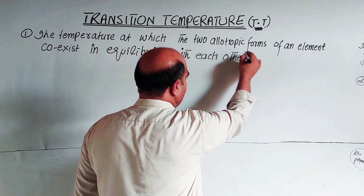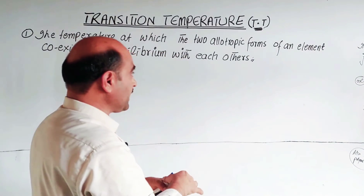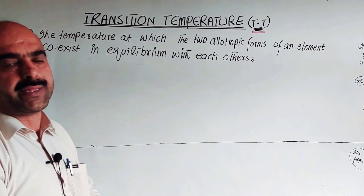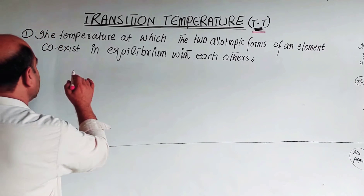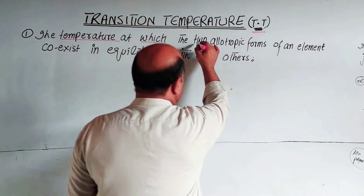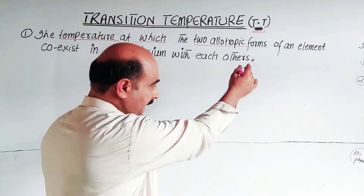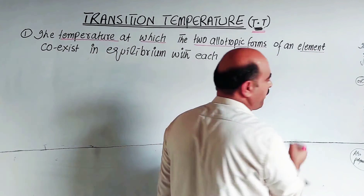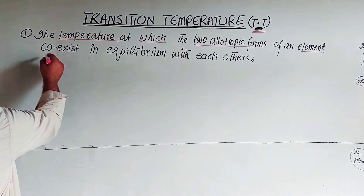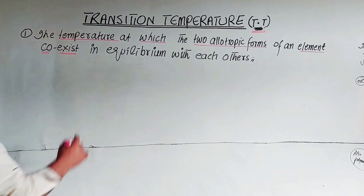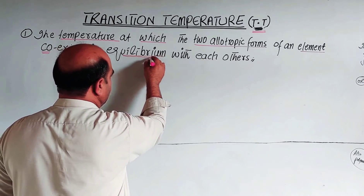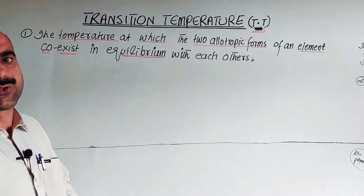Transition temperature is represented by TT — T means transition and the second T means temperature. So this is the temperature at which the two allotropic forms of an element exist in different physical states simultaneously, co-existing in equilibrium. This temperature is known as transition temperature.